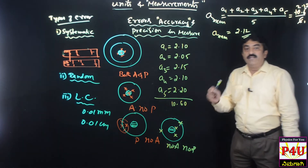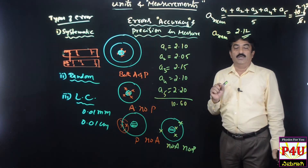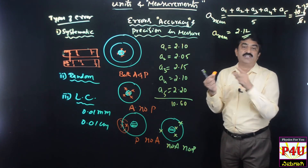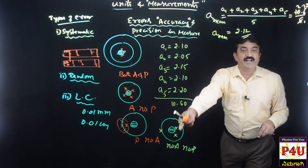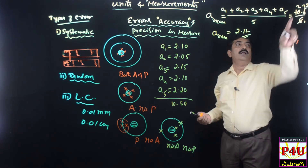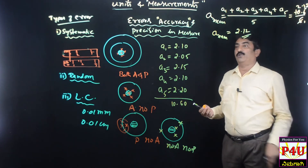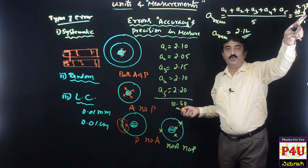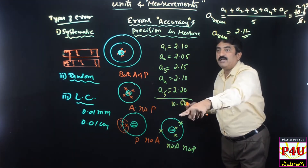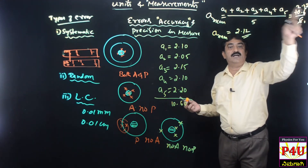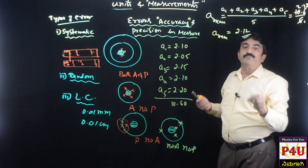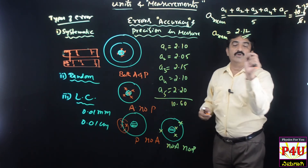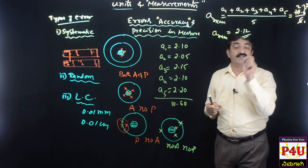This mean value is very close to the actual value. The average reading is equal to 2.12, which is very close to the true value or the real value or the actual value. This reading helps to minimize the error.